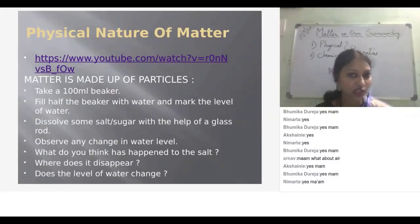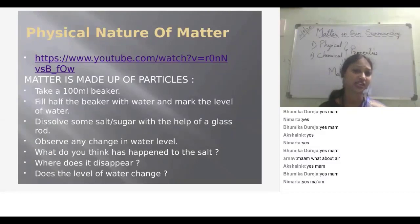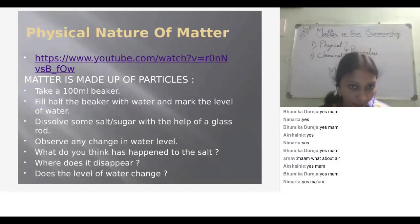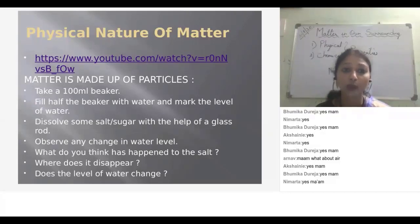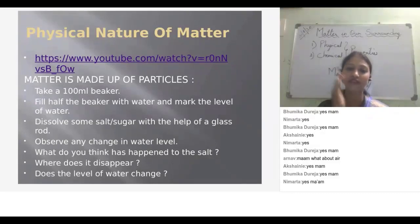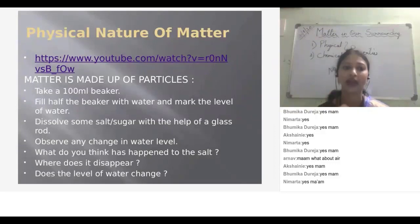Matter is classified on the basis of physical and chemical properties. This classification mainly deals with the physical nature of matter. In physical nature of matter, the composition of matter does not change. We won't touch the chemical properties of matter here — only the physical nature, meaning there is no change in the composition of matter.